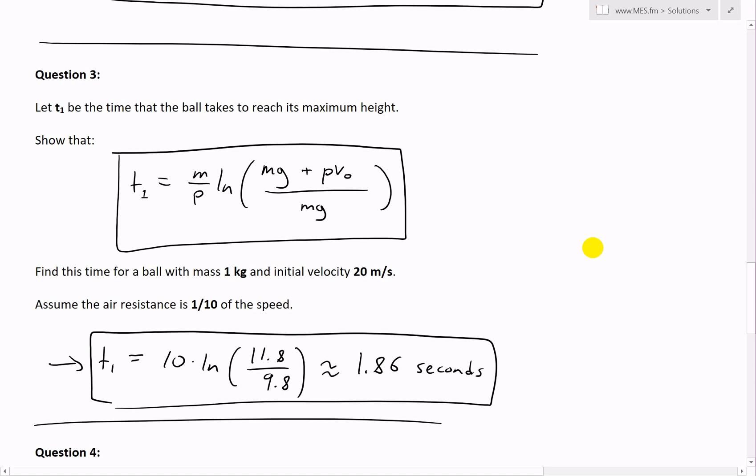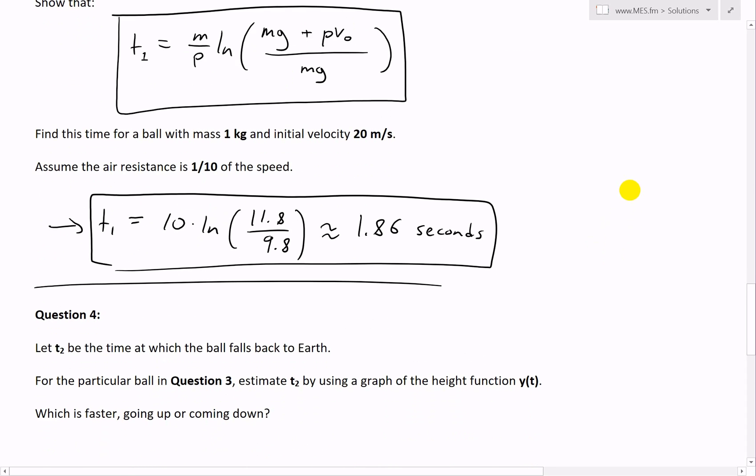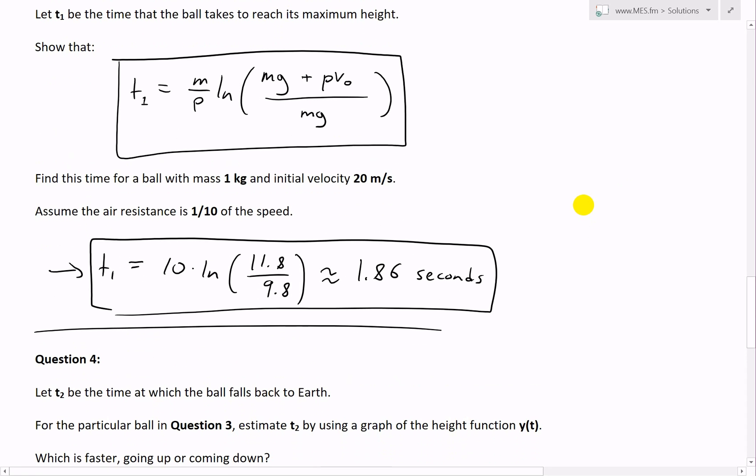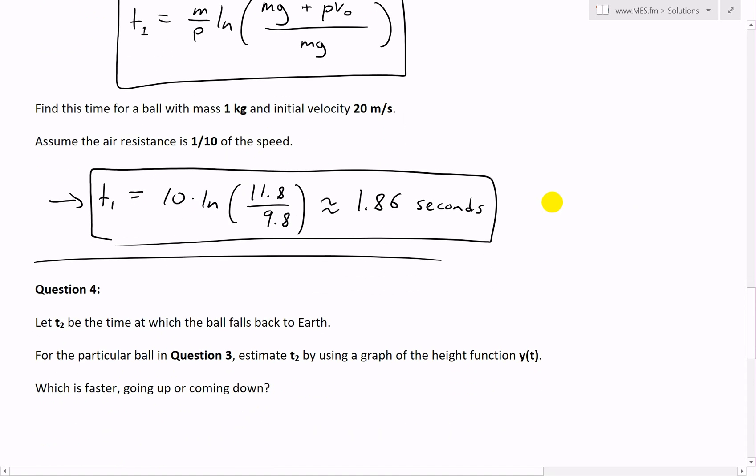For a particular example where the ball is one kilogram, initial velocity of 20 meters per second, and air resistance is one-tenth of the speed, the time it takes to reach the maximum height is 10 ln(11.8/9.8), which roughly equals 1.86 seconds.